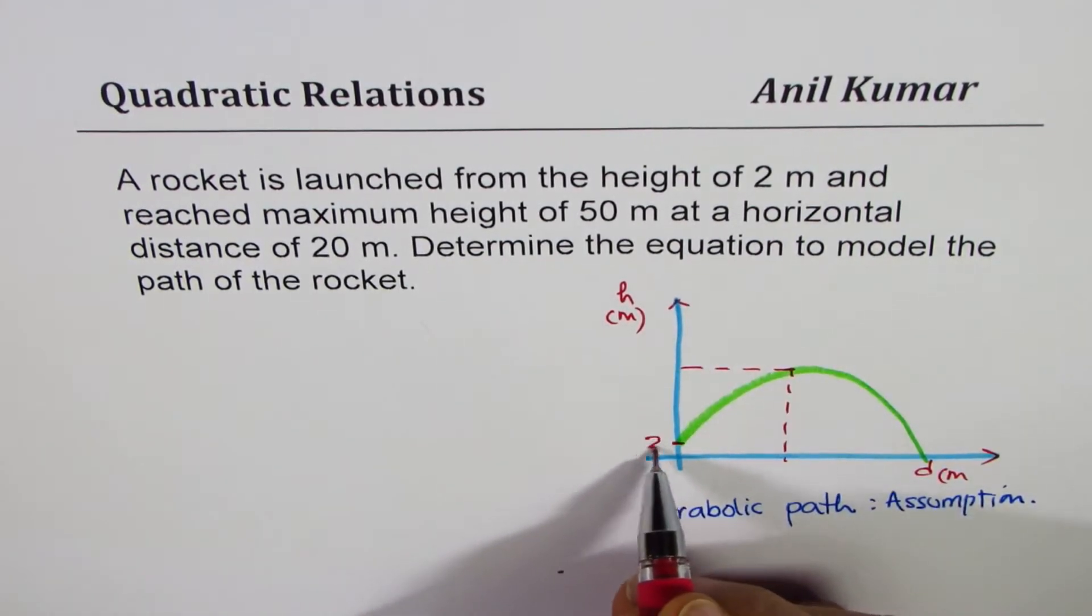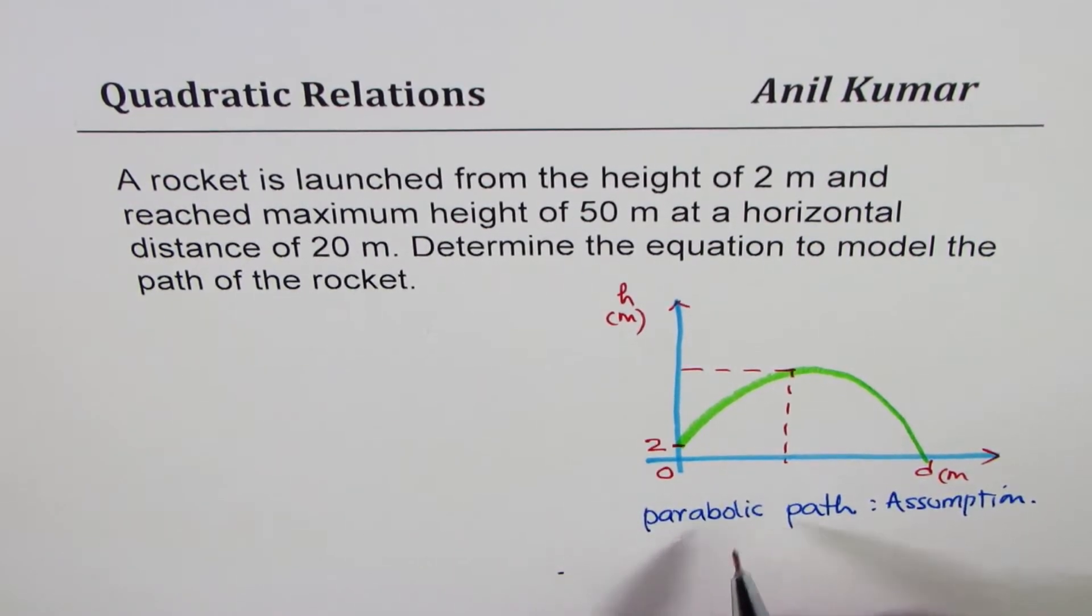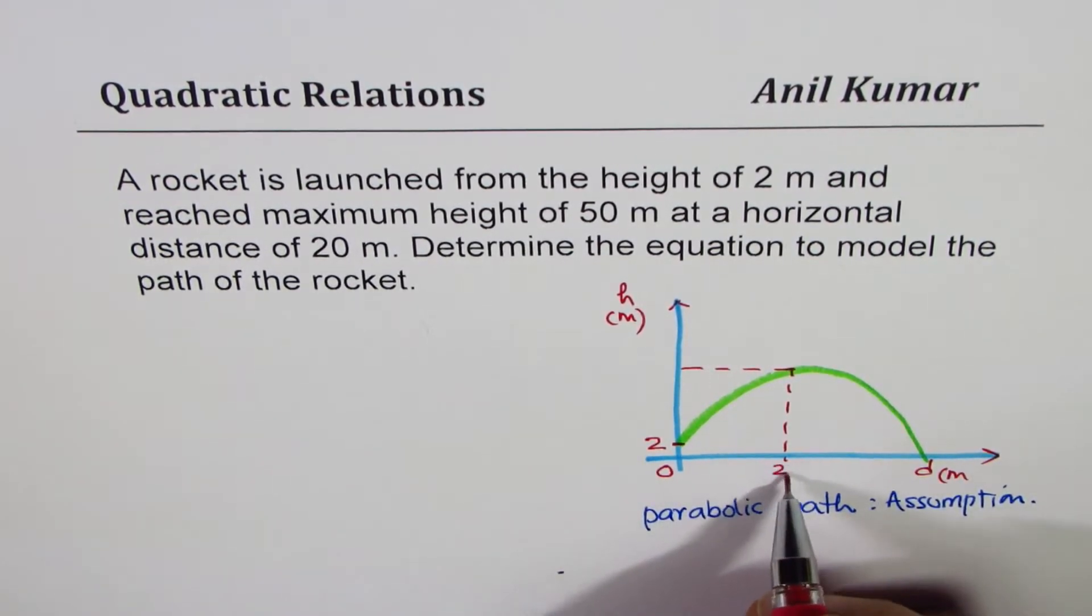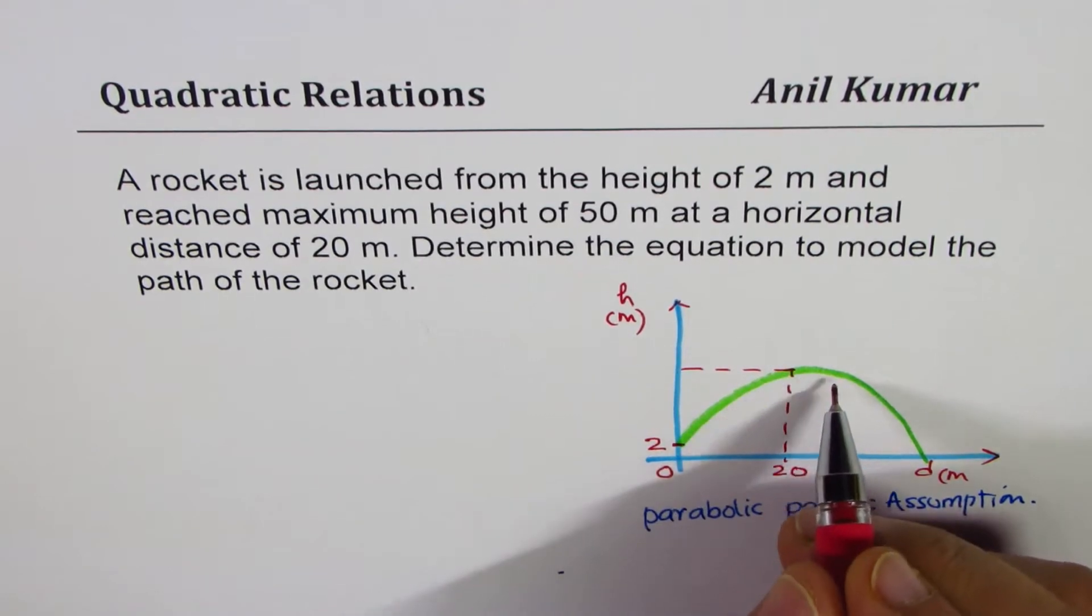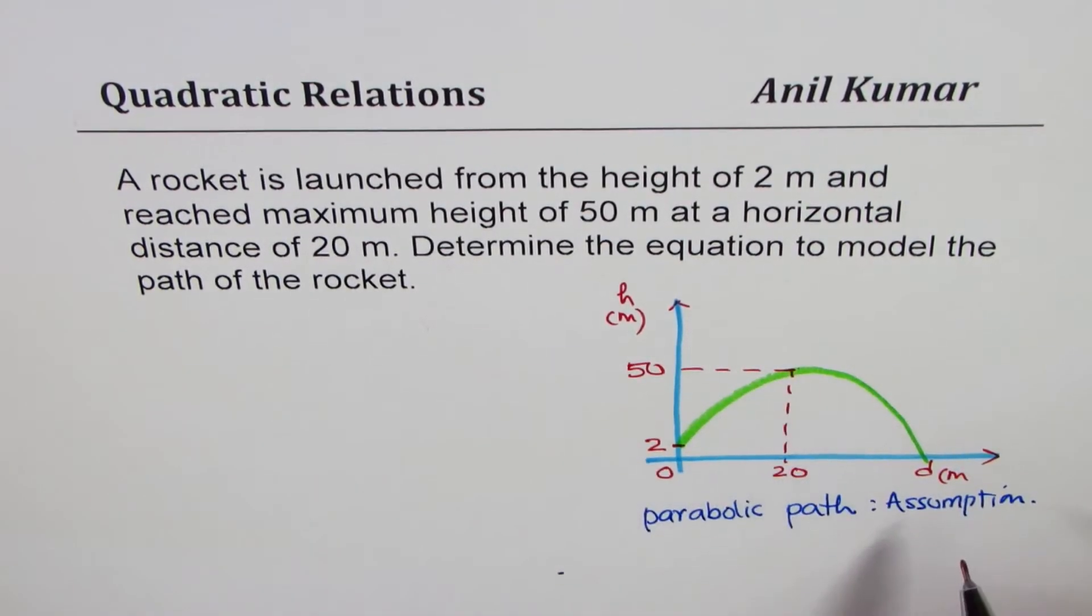So, 2 meters from the ground when distance is 0, and when the distance is 20 meters, it reaches a maximum height of 50. Let's call this the maximum height.